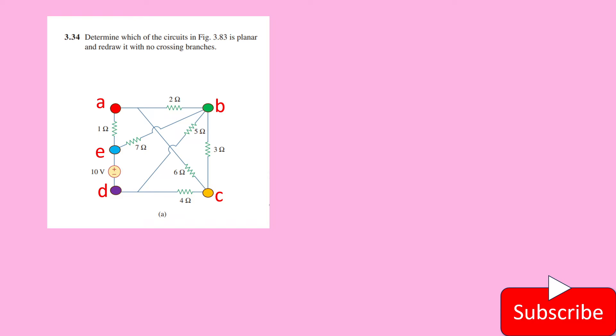And in this we have the crossing branches. That is from A to C, we have 6 ohm resistor placed. That is a crossing branch. And then from B to E, we have 7 ohm resistance. That is a crossing branch.